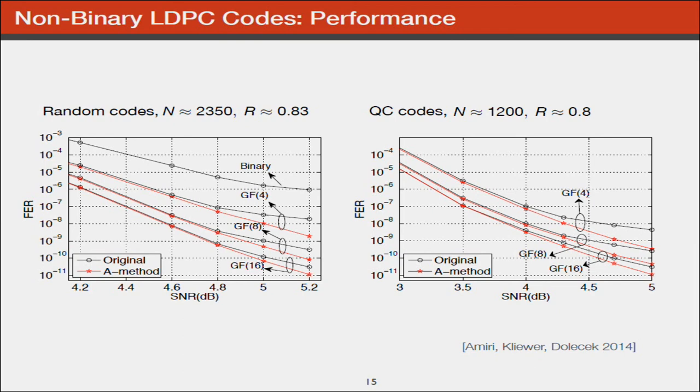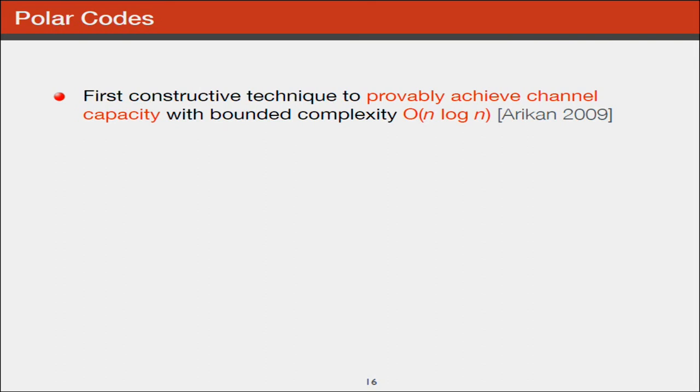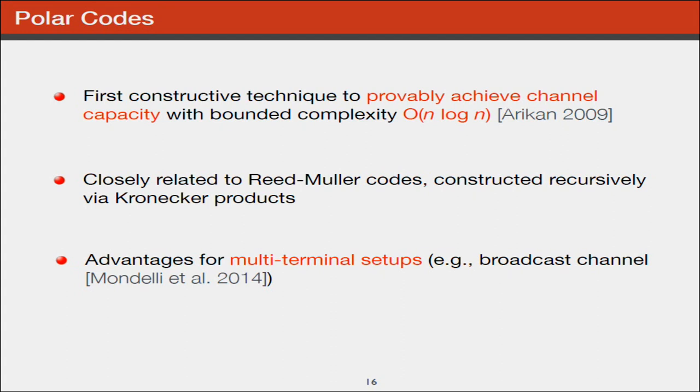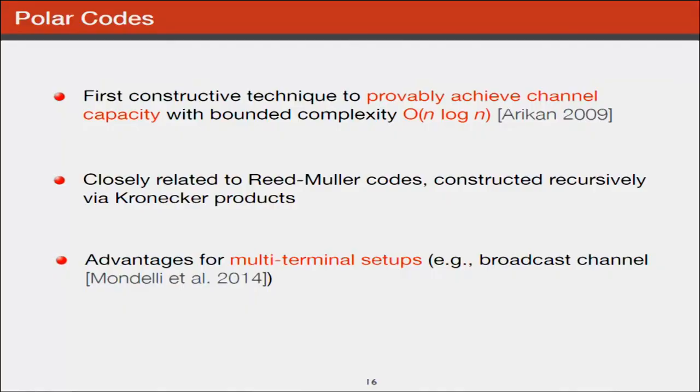Polar codes are the first constructive technique to provably achieve channel capacity with bounded complexity. They are block codes related to Reed-Muller codes and constructed recursively. The nice thing is they have advantages for multi-terminal setups. 5G requirements include coding for multi-terminal structures like broadcast setups where one node broadcasts to several receivers. This is where polar codes have an advantage - they're capacity achieving for the broadcast channel.